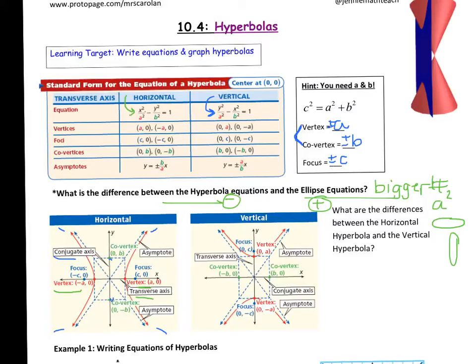For a vertical hyperbola, the arrows point up and down. On the y-axis are your vertex, your a and your c. It used to be called the major axis, but now we call it the transverse axis. On the x-axis you have your co-vertices, and that x-axis is called the conjugate axis.